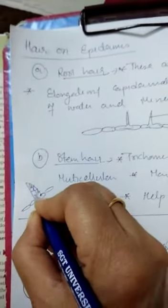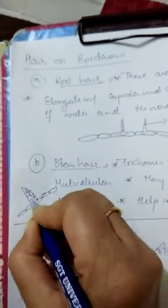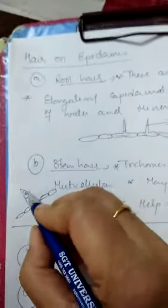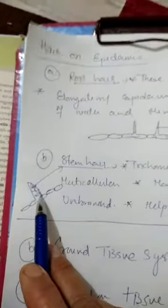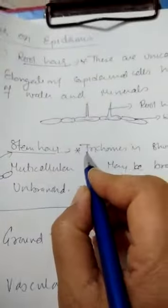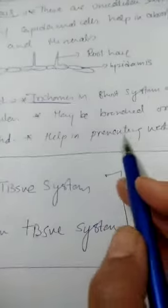Multicellular - I have already sent the pics of these notes. So you will draw the multicellular hair on your own. This multicellular stem hair is called trichomes and they may be branched or unbranched. So trichomes is a very important term. Trichomes are actually multicellular stem hair present on the epidermis and they help in preventing the loss of water.